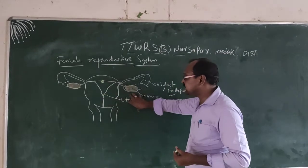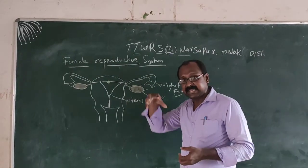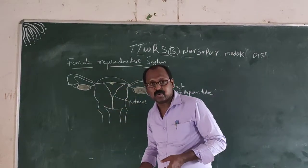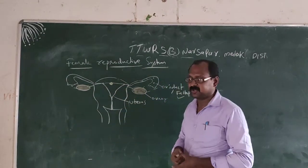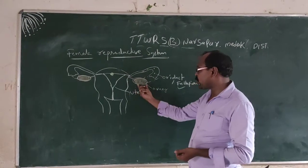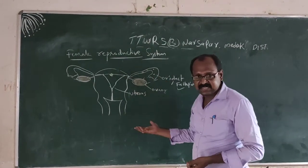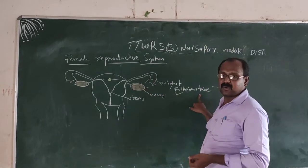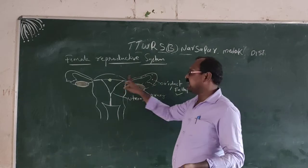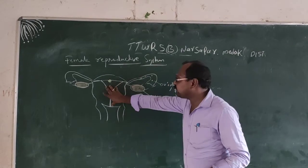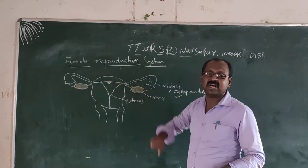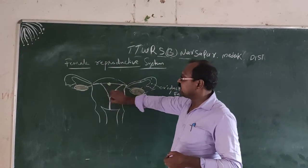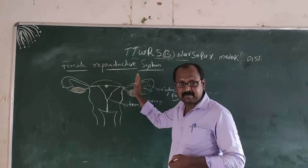The uterus is an important part — it implants the zygote and allows it to grow into an embryo and then a fetus. The main parts are: the ovary, which produces the egg; the fallopian tube, where fertilization occurs; and the uterus, where the embryo grows. This is how we describe the female reproductive system.